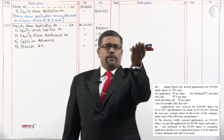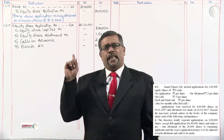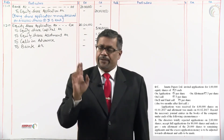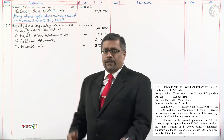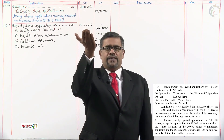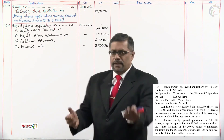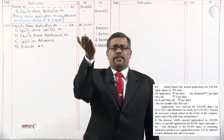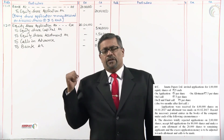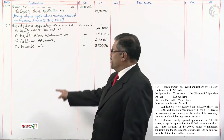Share application account is debited 20 lakhs — the money received. When we transfer, application balance decreases; decrease in liability means we debit. Of that, 5 lakhs transfer to share capital increases share capital — increase in liability means we credit. 1 lakh 50 adjusted to allotment — allotment increases, increase in liability, we credit. 2 lakh 50 to calls in advance — calls in advance increases, increase in liability, we credit. Remaining 11 lakhs refunded — bank balance decreases, decrease in asset.